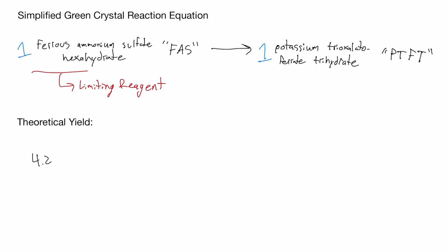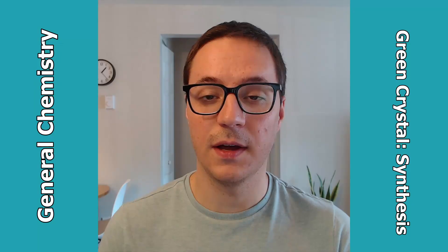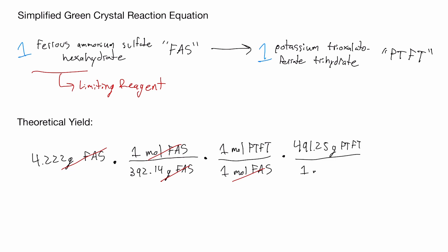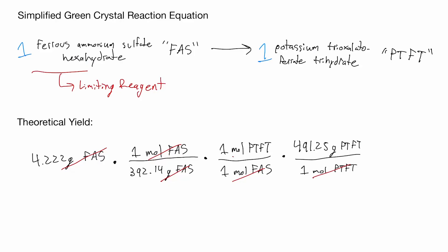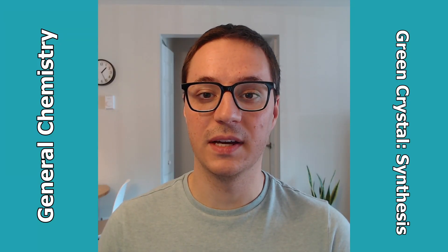For this example, 4.222 grams of FAS were weighed out as starting material. We'll convert this value to moles by dividing by the molar mass, leaving us with units of moles FAS. We'll then convert this value into moles of PTFT by using their stoichiometric ratio, which happens to be 1 to 1 here. Moles of FAS cancel out to leave us with moles of PTFT, which can be converted to a mass by multiplying by the molar mass of PTFT.